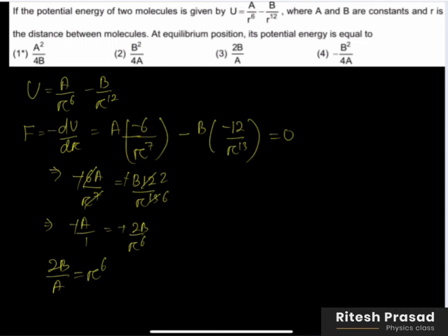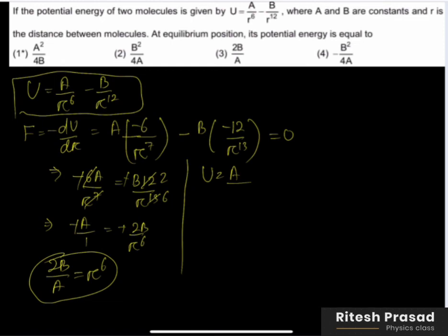So we need potential energy. In place of r to the power 6, I can write this value. Now put this in the potential energy. So U equals A by r to the power 6. Here is the potential energy. In place of r to the power 6, write 2B by A.